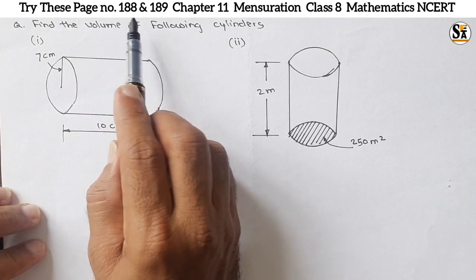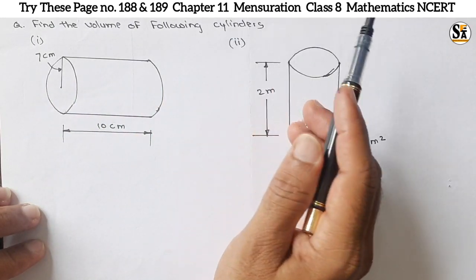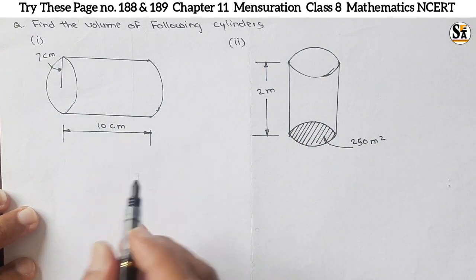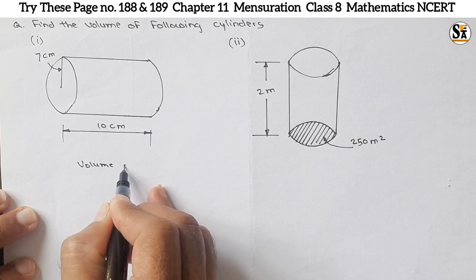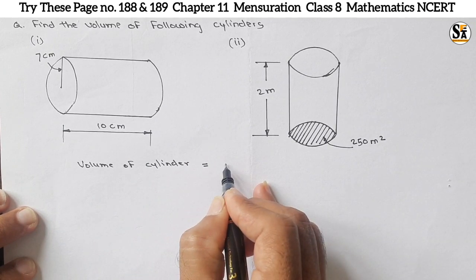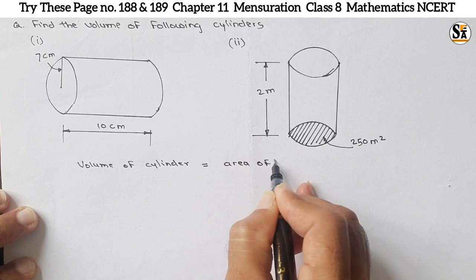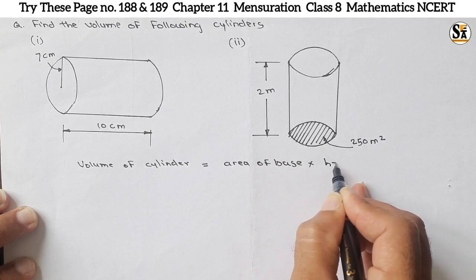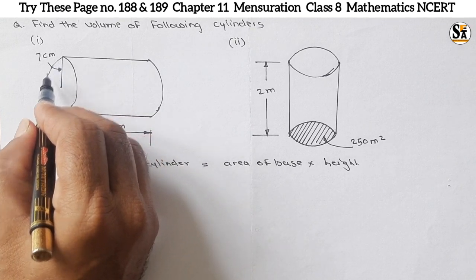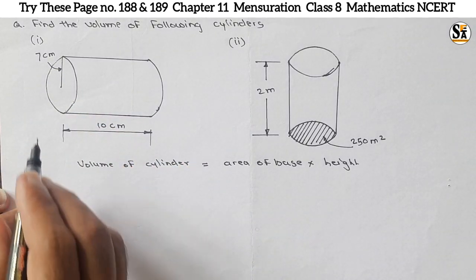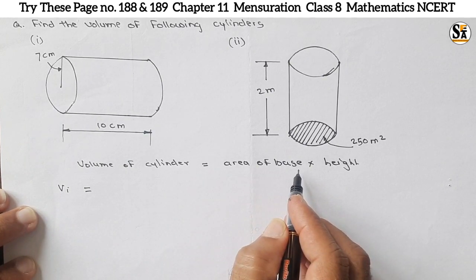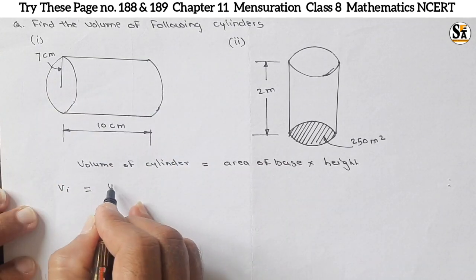Now see the question under 'Try This' section, page number 189: find the volume of the following cylinders. The formula for volume of cylinder is volume = area of base × height. The area of base of a cylinder is π r², so the formula becomes V = π r² × h.